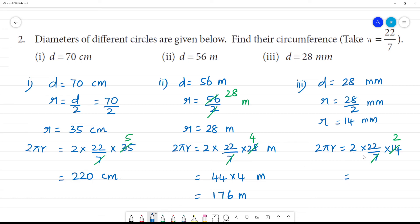Then, 2 into 22 is 44. 44 multiplied by 2 is 88 millimeters. Clear?